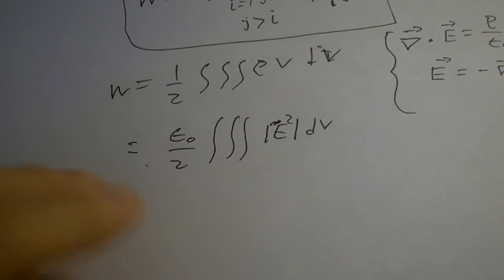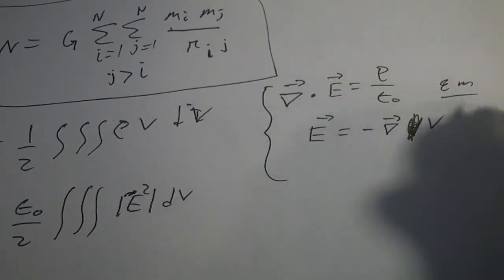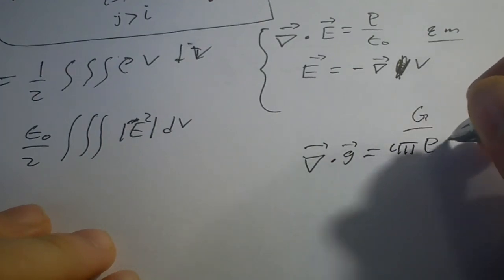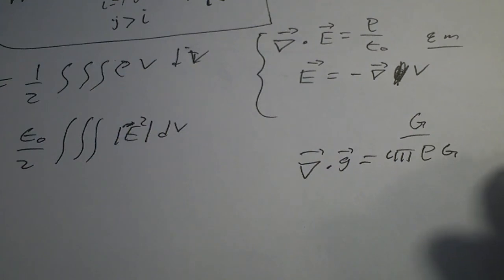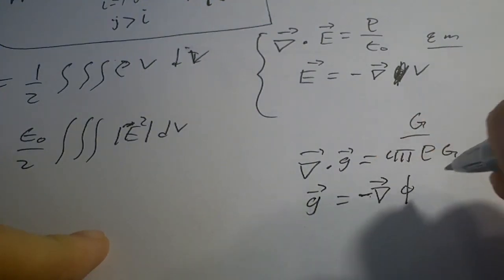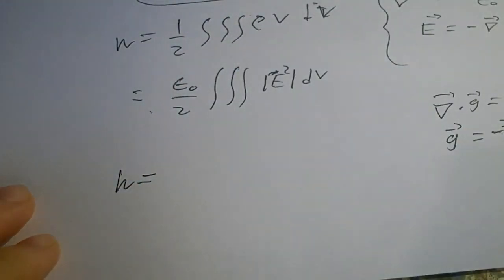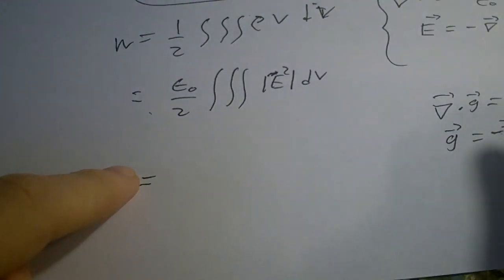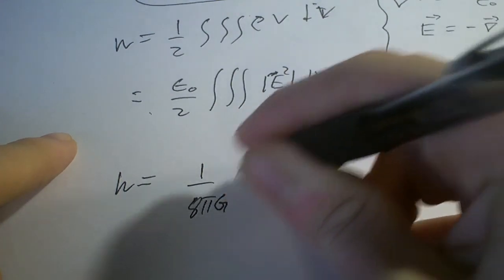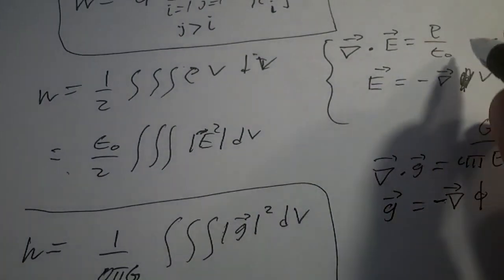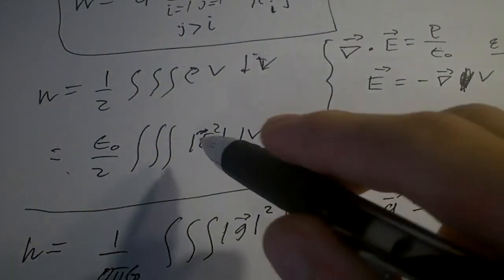Similarly for gravitational fields, the divergence of g equals 4 pi G rho and g equals minus the gradient of scalar field phi. Making all your substitutions, the work generated from the gravitational field is 1 over 8 pi G times the triple integral of the magnitude of the gravitational field squared dV. You do integration by parts and you'll see one term goes to zero, and you arrive at this result.